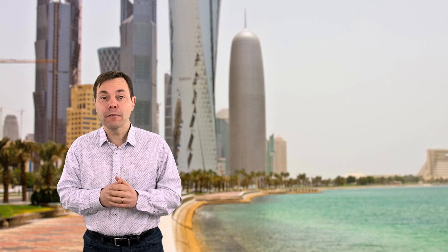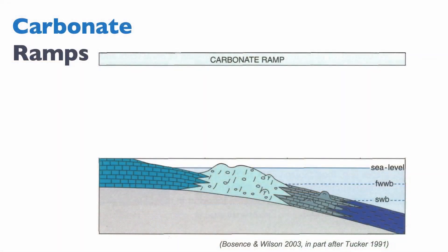So let's look at the facies model for carbonate ramps. On this diagram, you can see that on carbonate ramps we do not have a well-developed reef. This does not mean that we don't have reefs — you will see that in the Persian Gulf we have reefs — but the reefs do not form a barrier. So what's the barrier to wave energy? Well, it's the shoal.